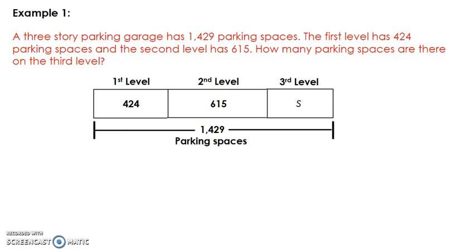Now I will write an equation for the strip diagram we just created to represent the problem. I will begin the equation with the whole number of 1,429, then subtract 424 from 1,429. Next I will subtract 615 from the difference of 1,429 and 424 to solve for the variable s. I now have a strip diagram and an equation to represent the problem.